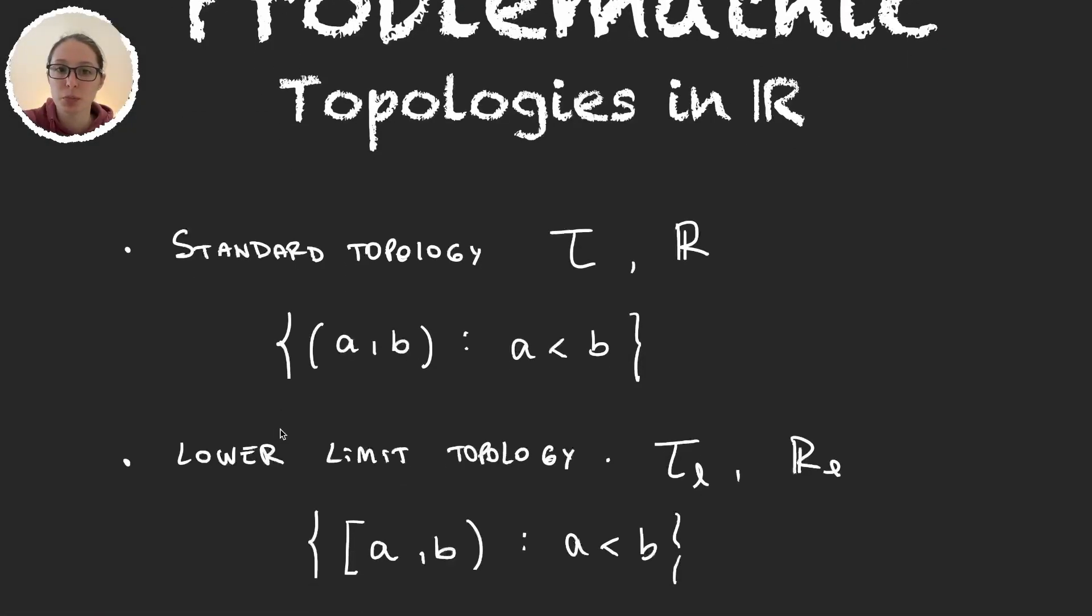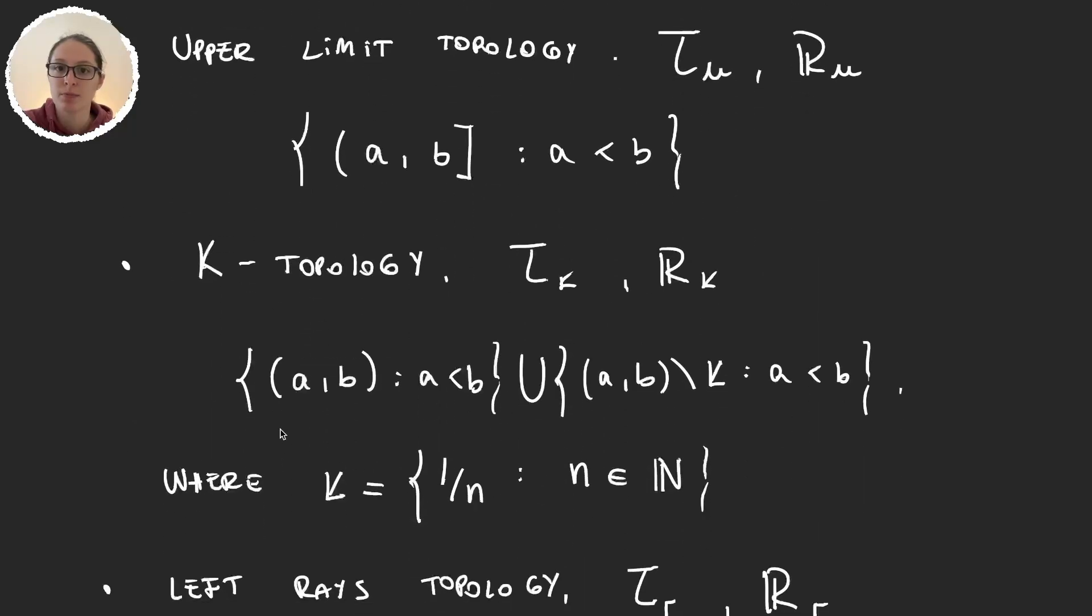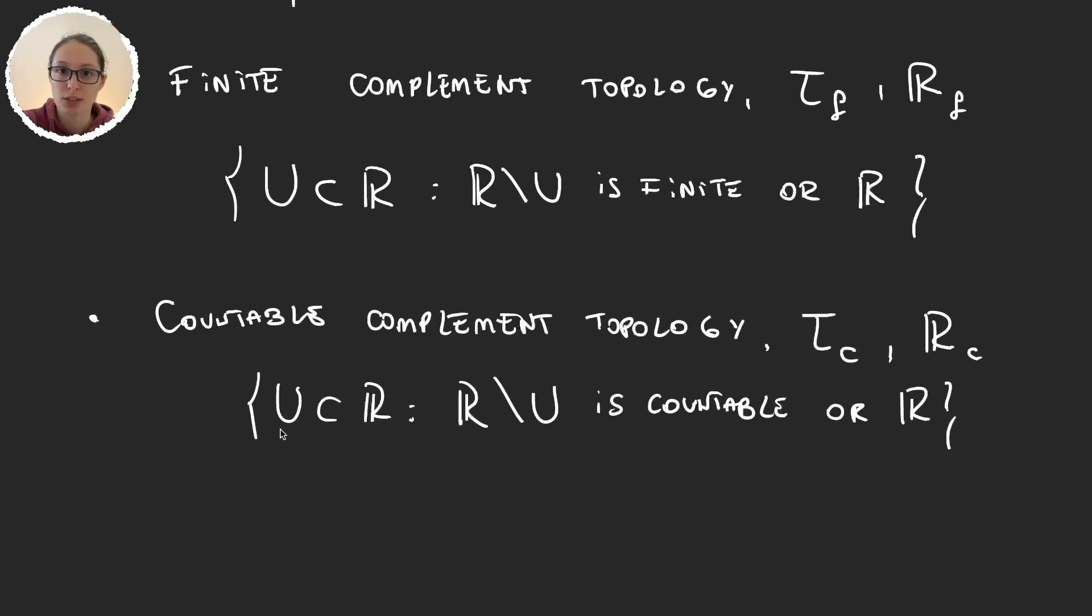In the last video we defined seven topologies in the real line. Now let's start proving some of those inclusions I talked about.